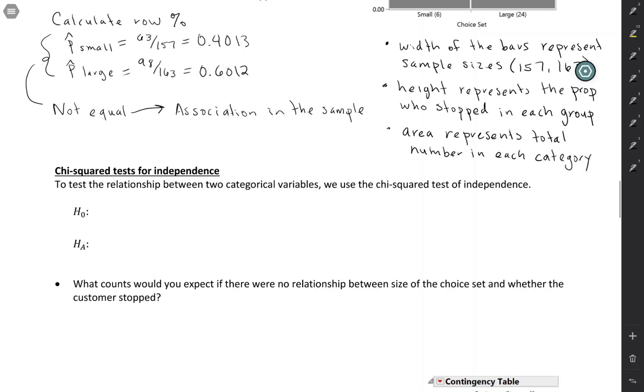Earlier we used a chi-squared goodness of fit test to test the distribution of one categorical variable. This is a different chi-squared test called a chi-squared test of independence, and this is used to test the relationship between two categorical variables.